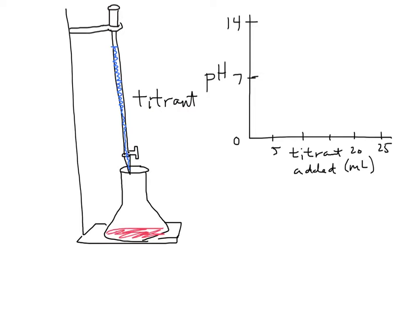One thing worth discussing is what changes about the solution to cause that color change when adding the titrant — which is a base — to our acid with the presence of an indicator, in this case phenolphthalein. This has a lot to do with equilibrium. The phenolphthalein indicator changes its color at a pH of around 8, between 8 and 10.